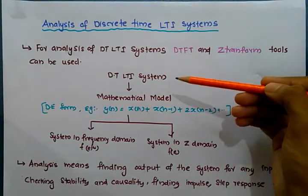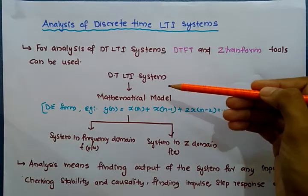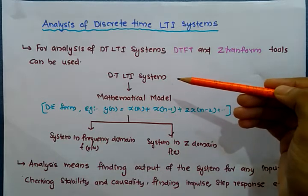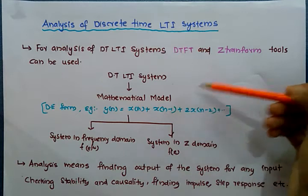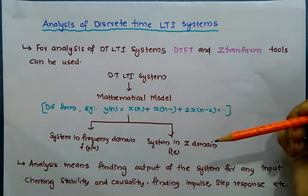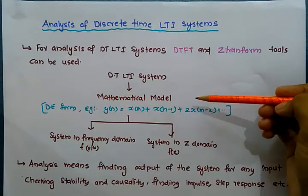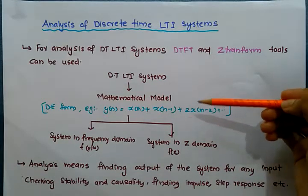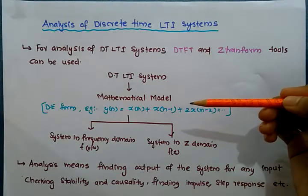Now, let's look at a discrete time LTI system. Its mathematical model is normally expressed as, for example, y(n) equal to x(n) plus x(n minus 1) plus 2 into x(n minus 2), and so on. This is a time domain system. When we analyze it in the time domain, it is very difficult to do so.